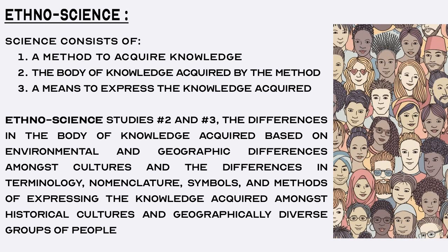Recall that science consists of three parts: a method to acquire knowledge about the natural world, the body of knowledge acquired through the method, and a means to express the knowledge acquired. While the method to acquire knowledge is universal amongst all historical cultures, the field of ethnoscience focuses on studying differences in the body of knowledge acquired based on environment and geographic differences amongst cultures prior to globalization. Ethnoscience also studies differences in terminology, nomenclature, symbols, and methods of expressing knowledge amongst historically and geographically diverse groups.